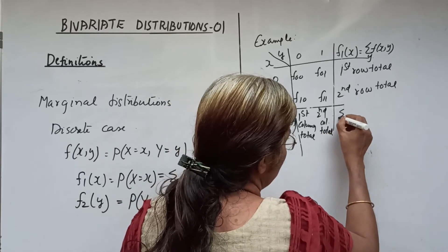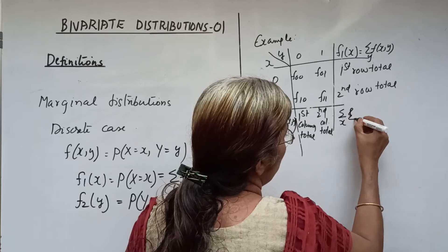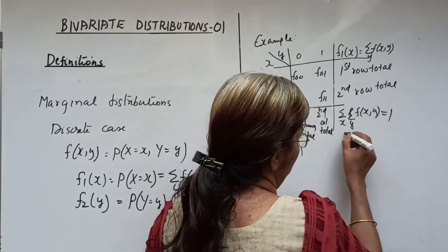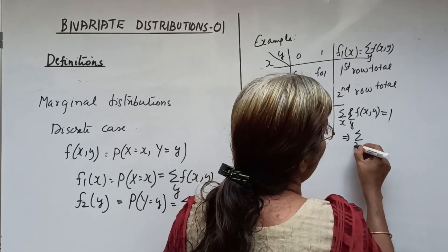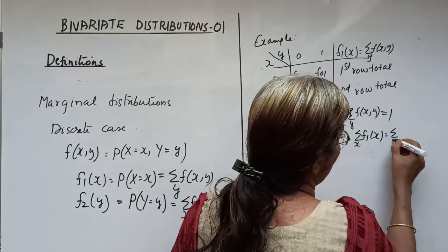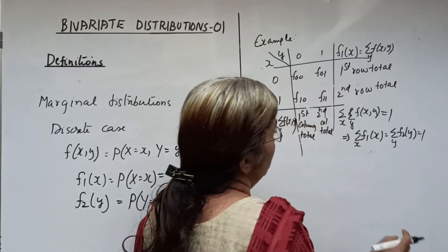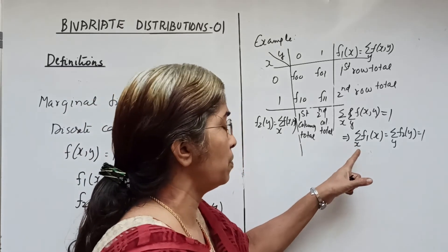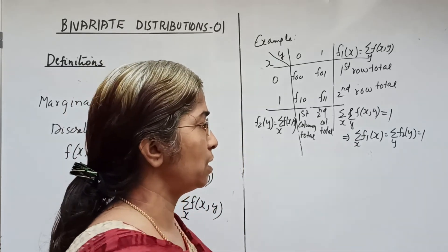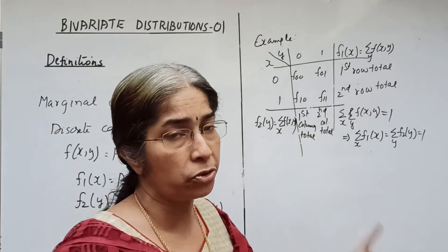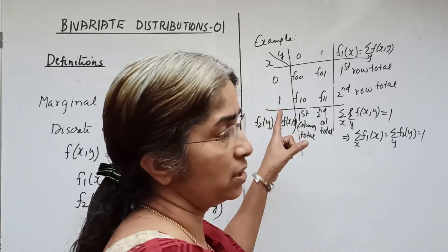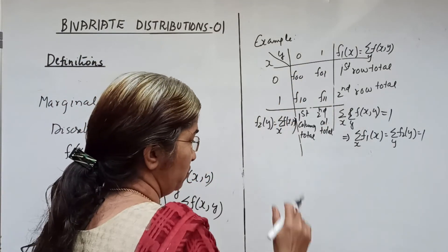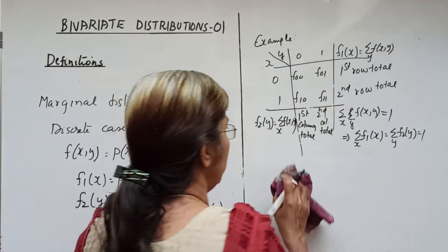The double summation sigma over x and sigma over y of f of x y equals 1, which implies that sigma over x of f1(x) equals sigma over y of f2(y) equals 1. The total of the row totals equals 1 and the total of the column totals equals 1, meaning the grand total should be equal to 1. This is the structure of a bivariate probability table.